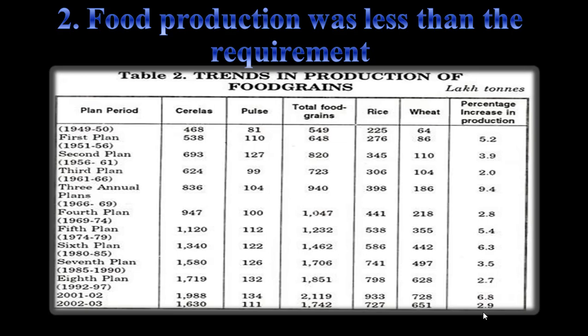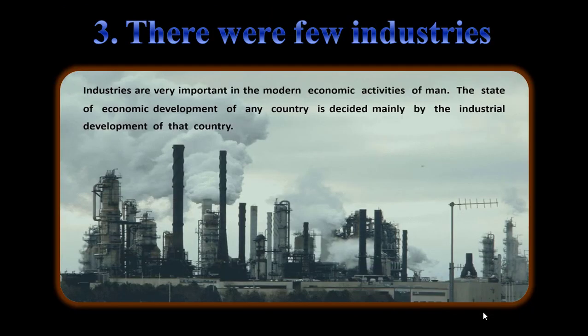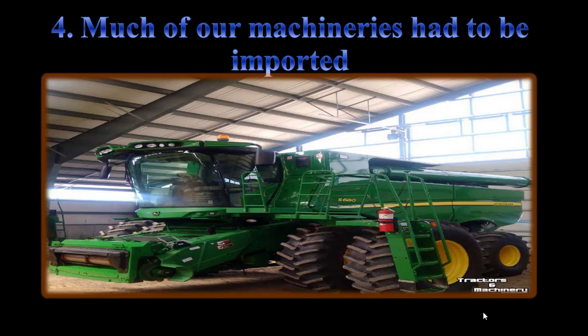Food production was very less for the requirement of the Indian population, which was a major problem at independence. Third, there were very few industries. Industries are very important in modern economic activity, and the state of economic development of any country is decided mainly by its industrial development. India had very few industries, which was a major drawback.